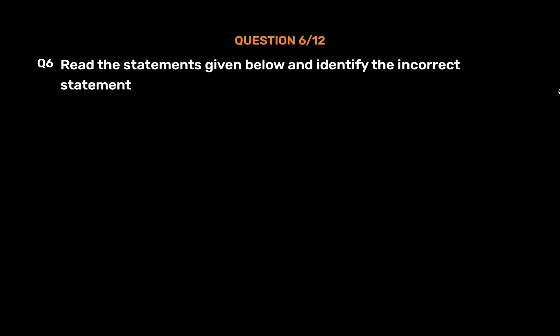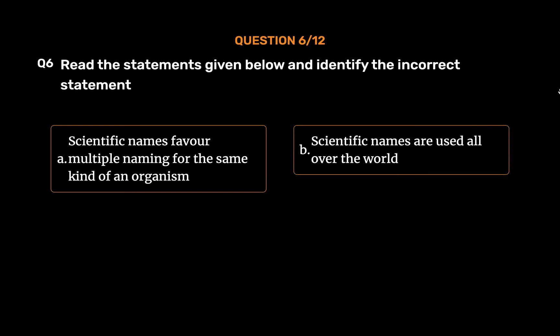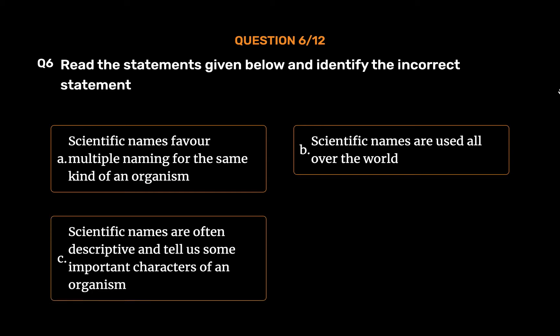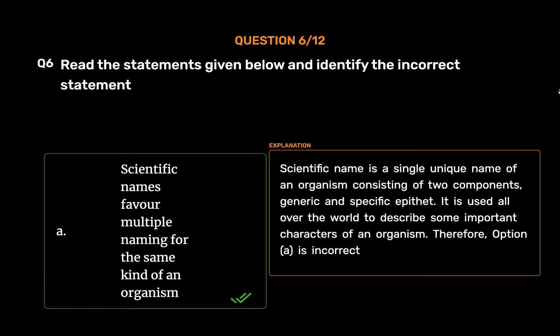Question No. 6. Read the statements given below and identify the incorrect statement. Option A: Scientific names favor multiple naming for the same kind of an organism. Option B: Scientific names are used all over the world. Option C: Scientific names are often descriptive and tell us some important characters of an organism. Option D: Scientific names indicate relationship between species. The correct answer is Option A. Scientific name is a single unique name of an organism consisting of two components, generic and specific epithet. It is used all over the world to describe some important characters of an organism. Therefore, Option A is incorrect.